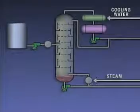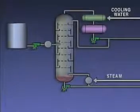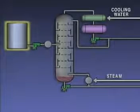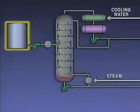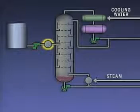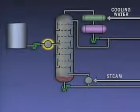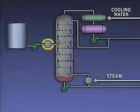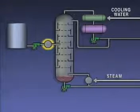Let's take a look at a simplified representation of a distillation system. In this example, the feed is stored in a tank. During operation, a pump is used to move the feed from the tank to a preheater. In the preheater, the mixture is heated under pressure to just below its boiling point.